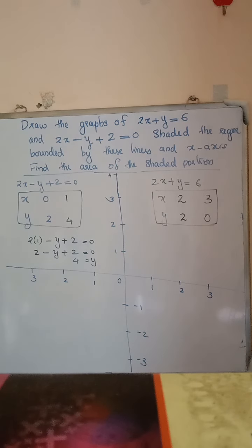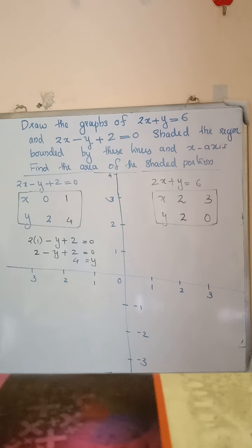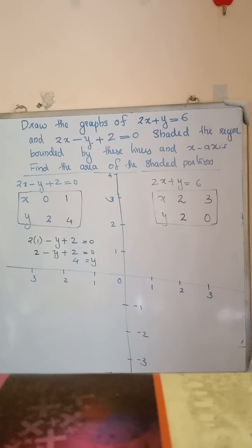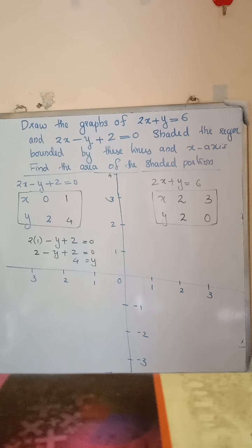Now, we discuss the problem. Draw the graphs of 2x plus y is equal to 3 and 2x minus y plus 2 is equal to 0. Shade the region bounded by these lines and the x-axis. Also find the area of the shaded portion.